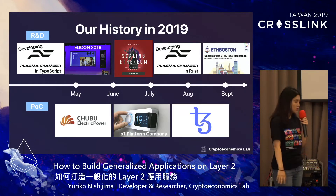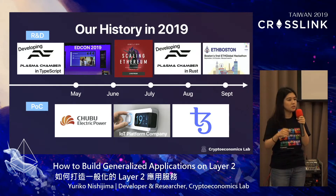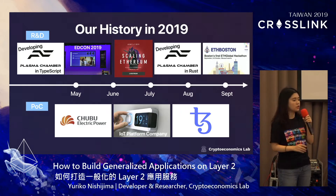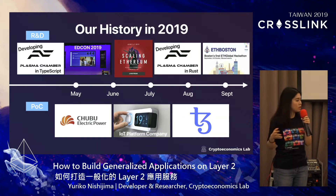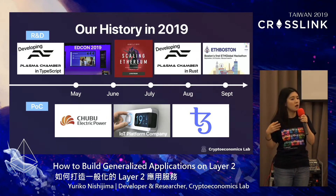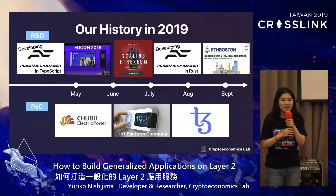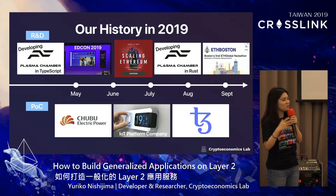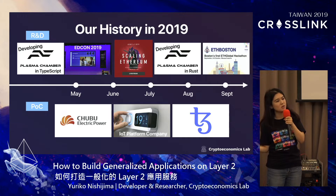At the same time, we have been running POC projects with clients. For example, we've been developing a peer-to-peer token trading system for home-generated electricity with a tube electric power company. We've also been researching with an IoT platform company to explore real use cases of Plasma. We are very grateful to have them as clients, because without them we wouldn't have been able to create real-world use cases of Plasma and run sustainable R&D at the same time as a startup.